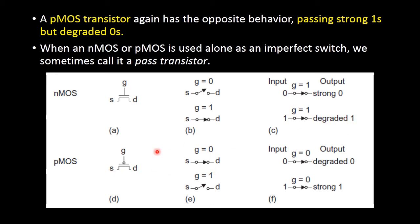Now let us come to the PMOS transistor. In PMOS transistor, when G is equal to 0, the PMOS transistor is in on condition. At that time, if you are giving the input as 0, at the output you will be getting a degraded 0. And when we are giving the input as 1, at the output we will be getting a strong 1. So PMOS transistor acts as a perfect switch in passing 1 but as an imperfect switch when passing 0.